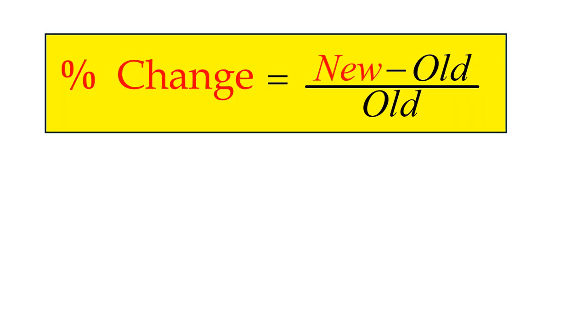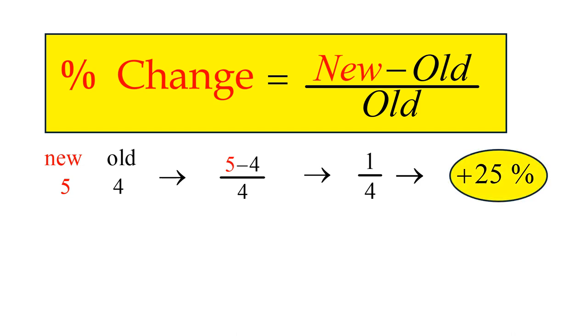In our last slide, the new value 5 is 1 more than the old value 4. The difference 1 divided by the old value 4, a percentage change of 25%.